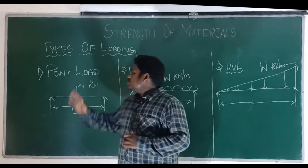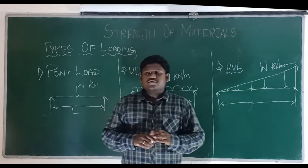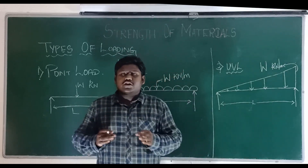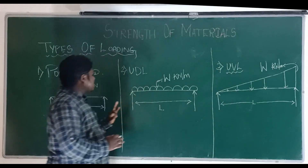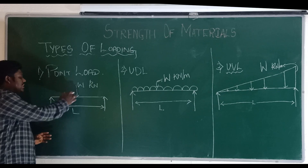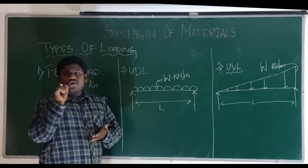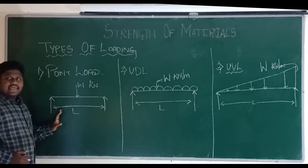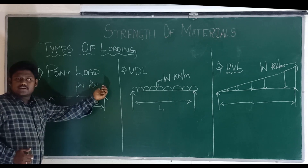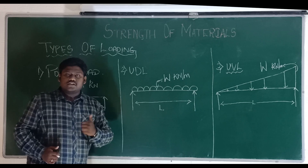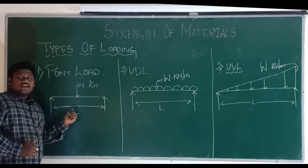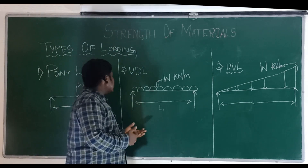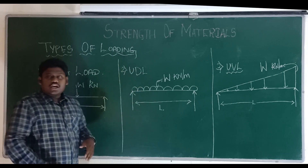Coming to the second point: the types of loading conditions. We have different types of loading conditions in practical analysis, but basically you need three. The first is a point load, which is nothing but a concentrated load acting at one particular point. We have a beam of length L, and a point load of W kilonewtons acting on it. When doing analysis with this type of loading, we take the entire load W as it is.